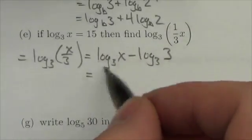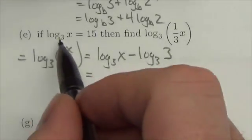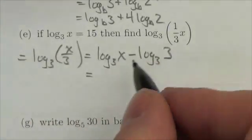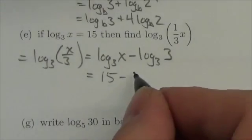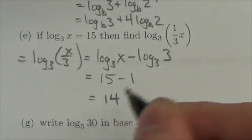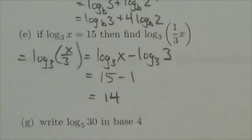But now that I've separated out the variable from the other piece here, well the log base 3 of x, I can make that substitution now. That's 15. And the log base 3 of 3, well that's just 1. And so my answer here is 14. That's the number they're looking for.